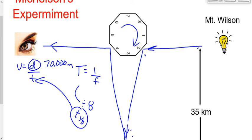This gives us a much, much better value. This is a more important experiment because the value is better. And practically for us, we have to be able to solve these Michelson problems. I've never seen a Galileo problem on an exam — this is on there almost every time. We have to be able to use this experiment to determine the speed of light.